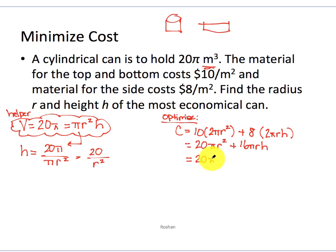So I have 20πr² plus 16πr. Instead of h, I'm putting in 20 over r². So now continue simplifying. 20πr² plus 16 times 20 is 320πr divided by r². I'm just going to write r to the negative one because that's going to be easy to take the derivative of.